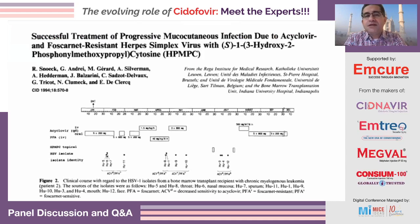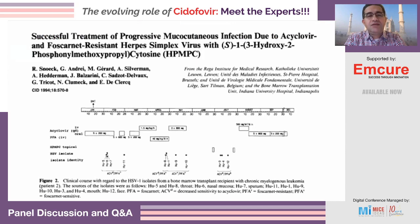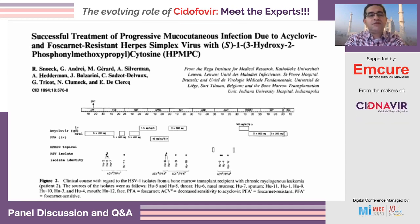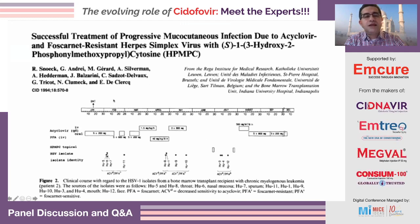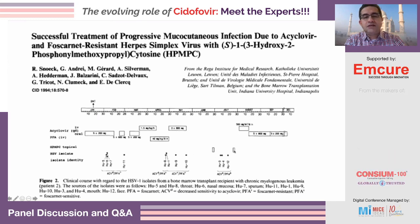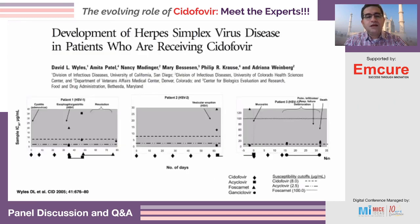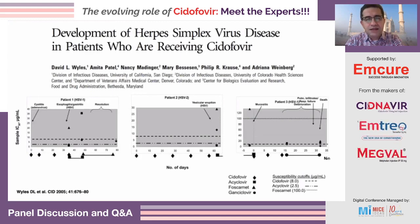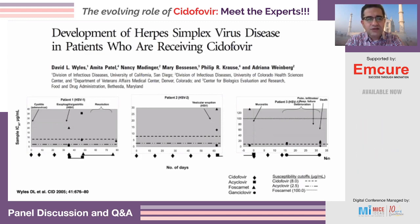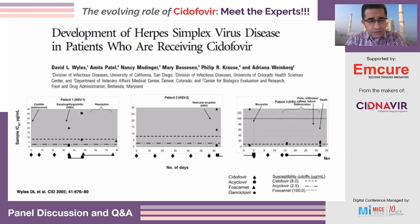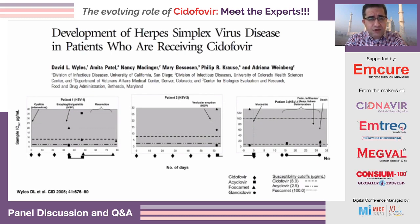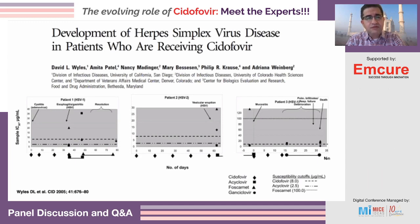What else is cidofovir used for in bone marrow transplant patients? One use is topically for cutaneous herpes simplex resistant to acyclovir. The first report from 1994, from De Clercq's group, showed topical cidofovir leading to resolution in a patient with acyclovir- and foscarnet-resistant HSV. One important note: when you use cidofovir systemically for adenovirus or CMV, you can see herpes simplex reactivation. Those cases are not necessarily resistant, so if we're using cidofovir, especially the first few weeks before steady state, we continue acyclovir prophylaxis in these patients.